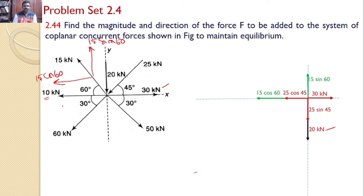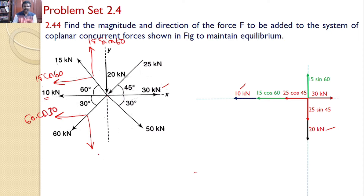The next force is 10 kN acting along the x-axis, so there is no vertical component. Next, the 60 kN force makes an angle of 30° with the horizontal. Resolving it: the x-axis component is 60 cos 30° and the y-axis component is 60 sin 30°.